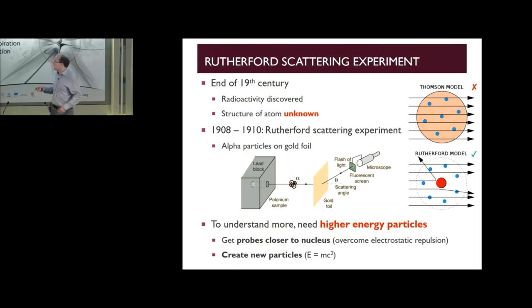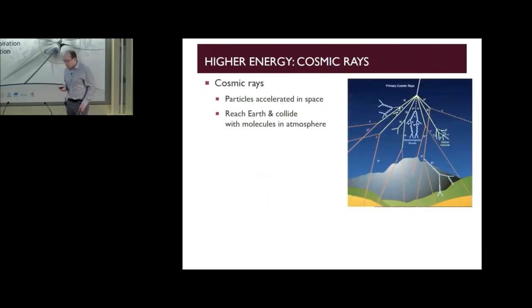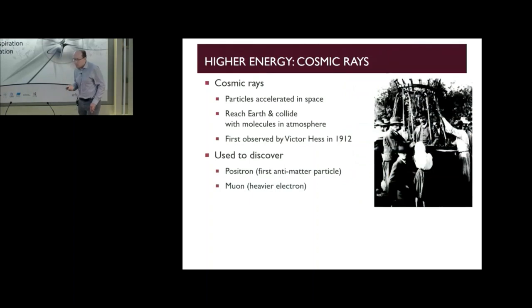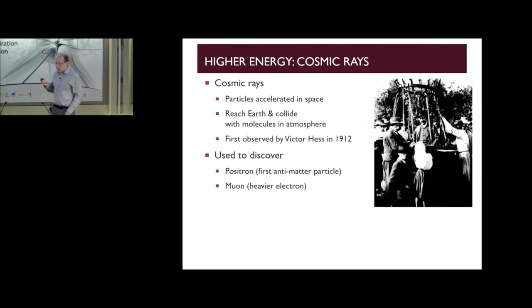One way to go up to higher energies is to make use of cosmic rays. Cosmic rays are particles that are accelerated in space. They reach the Earth and collide with molecules in the atmosphere, and then they produce showers of lots of high energy particles like you can see here. They were first observed by Victor Hess in 1912. You can see him in this balloon here, one of the balloons that he used to perform some of his cosmic ray experiments.